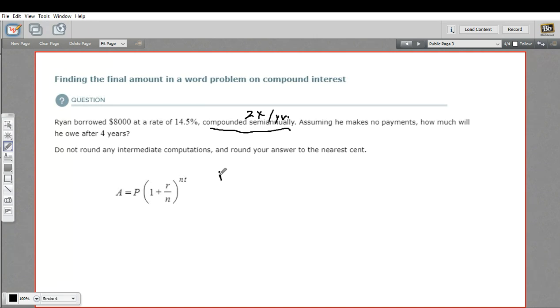So in this case, our interest rate is 14.5%. I've got to move that decimal point two places to the left. It would be 0.145. So that's our R in this formula. N, the number of periods per year, it's just two. It's twice a year.